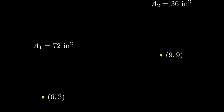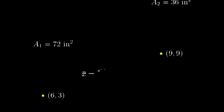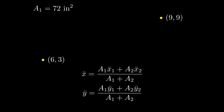The formula for finding the centroid of a composite shape is x-bar equals the sum of each area times its x-coordinate divided by the total area. And similarly for y-bar.